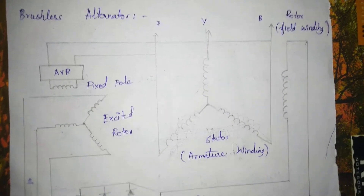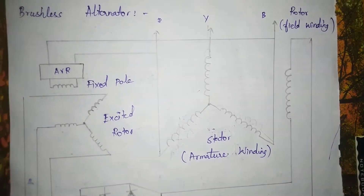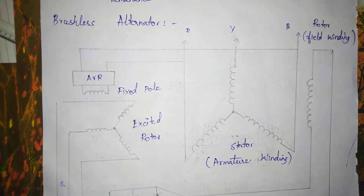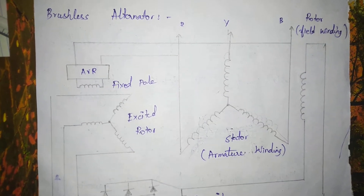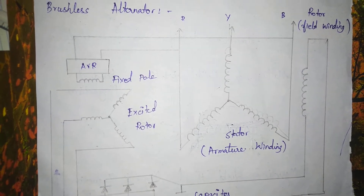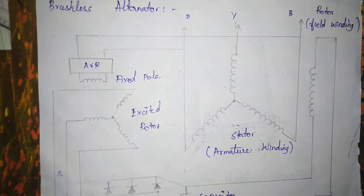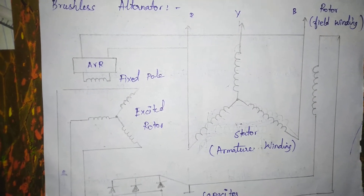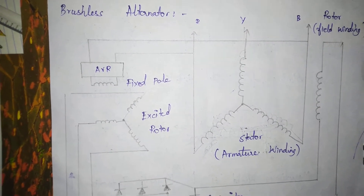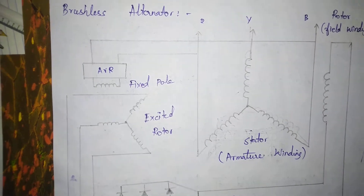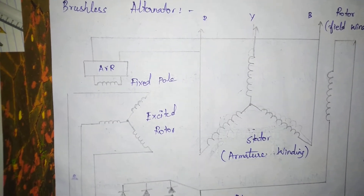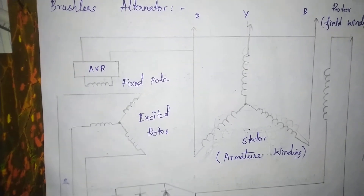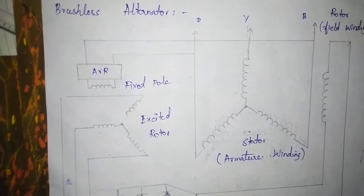This is the fourth video. We will talk about how AC is generated. We use a rotating armature alternator as well as a rotating field type generator.